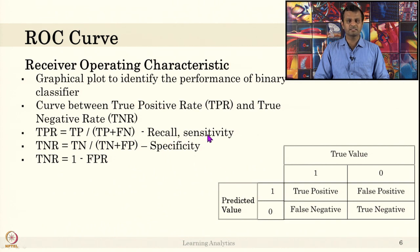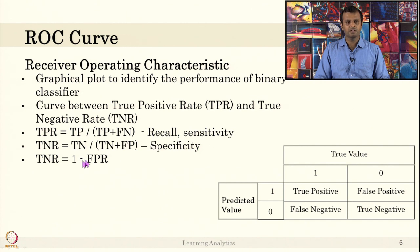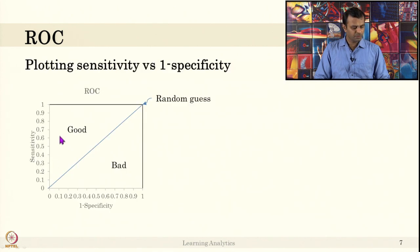True positive rate is also called sensitivity. True negative rate is true negative divided by true negative plus false positive, which is called specificity. True negative rate is sometimes expressed as 1 minus false positive rate, where false positive rate is false positive divided by false positive plus true negative. So the ROC curve plots sensitivity versus 1 minus specificity.